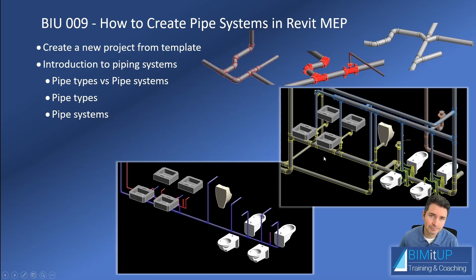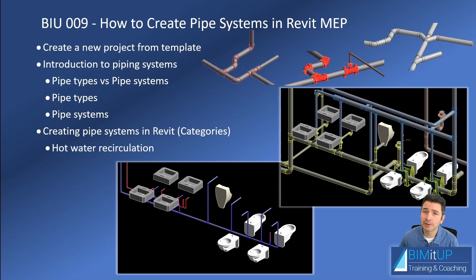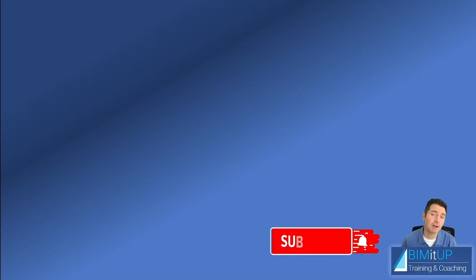It's important to understand this. We're going to talk about how to create pipe systems in Revit, which depends a lot on the categories of those pipes — I'll do a separate video on categories. Finally, we're going to create two pipe systems: a hot water recirculating system and a storm system.